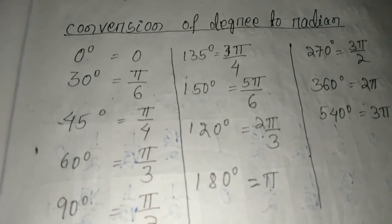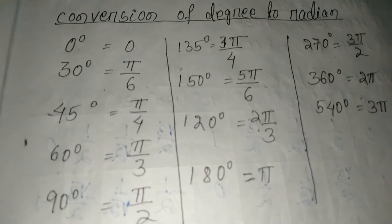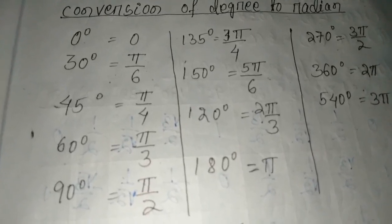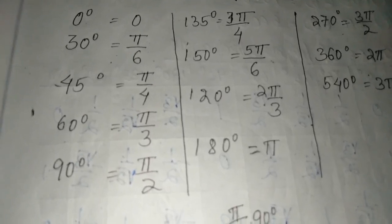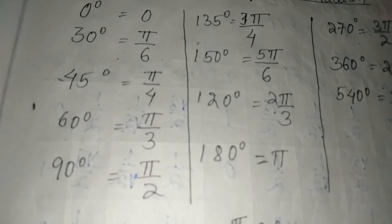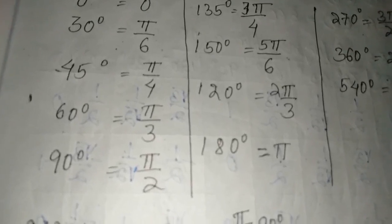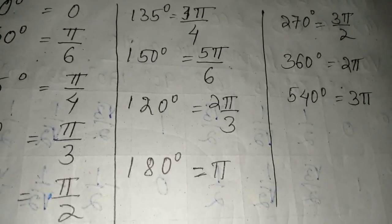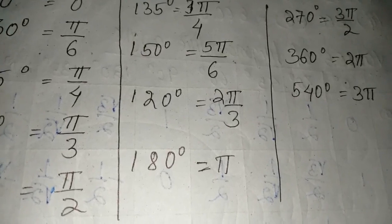Now we can know the conversion of degrees to radians. 0° = 0, 30° = π/6, 45° = π/4, 60° = π/3, 90° = π/2, 120° = 2π/3, 135° = 3π/4, 150° = 5π/6, 180° = π, 270° = 3π/2, 360° = 2π, 540° = 3π. Remember these, they are very important.